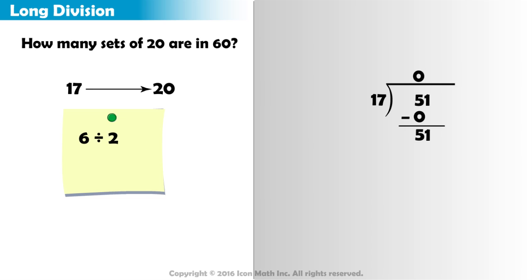6 divided by 2 is 3, so 60 divided by 20 equals 3. We can use this estimation to guess that 17 goes into 51 about 3 times.